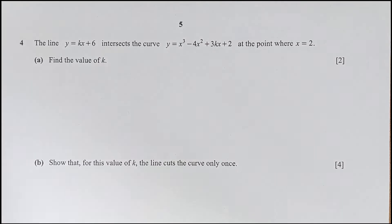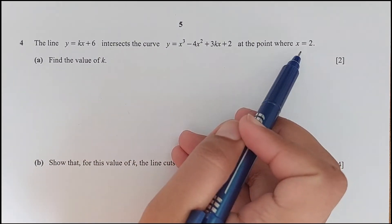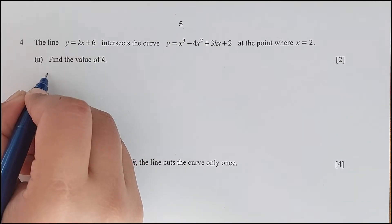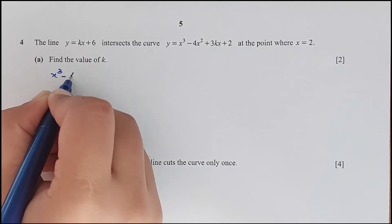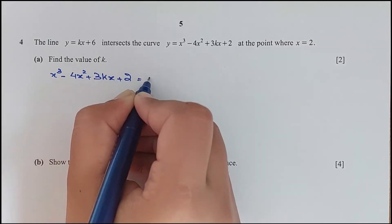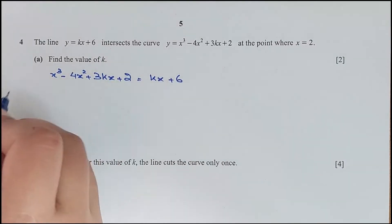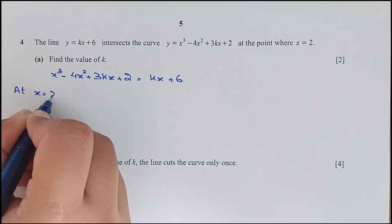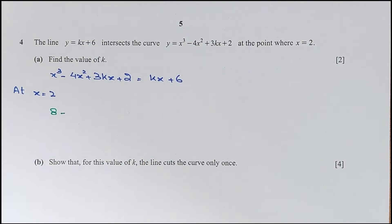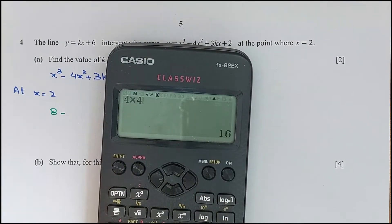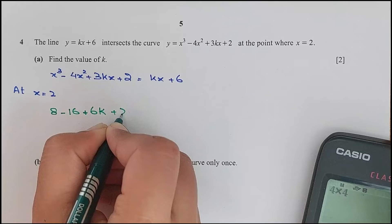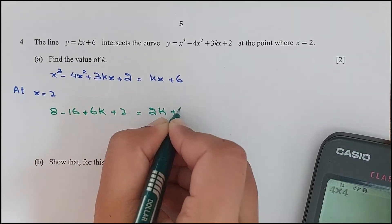Question number 4. The line intersects the curve at a point where x equals 2. Find the value of k. The line and curve intersect, so we set them equal: x cubed minus 4x squared plus 3kx plus 2 equals kx plus 6. At x equals 2: 2 cubed minus 4 times 2 squared plus 3k times 2 plus 2 equals 2k plus 6. So 8 minus 16 plus 6k plus 2 equals 2k plus 6.